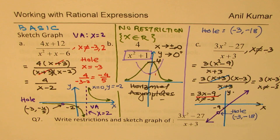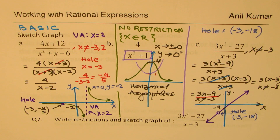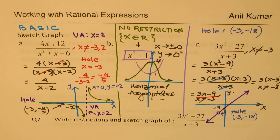That gives you a fairly good idea about sketching rational expressions. With these simple examples I've given you all the key flavors — holes, vertical asymptotes, no restriction, and a linear result. Question 7: write the restrictions and sketch the graph of 3x² - 27 over x + 3.